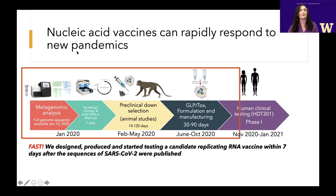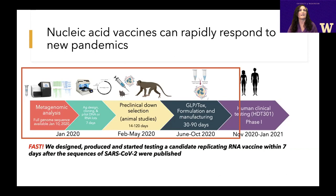Similar to many other groups, we got to work on a nucleic acid vaccine within a week after the full genome sequence of the virus was identified on January 10th. By January 17th, we had a candidate RNA vaccine already testing in animal models. We are now in a phase one human clinical trial. The main point is that RNA and DNA vaccines are really some of the fastest vaccine strategies to develop against a pandemic, which is why Pfizer and Moderna are really the first ones crossing the finish line.